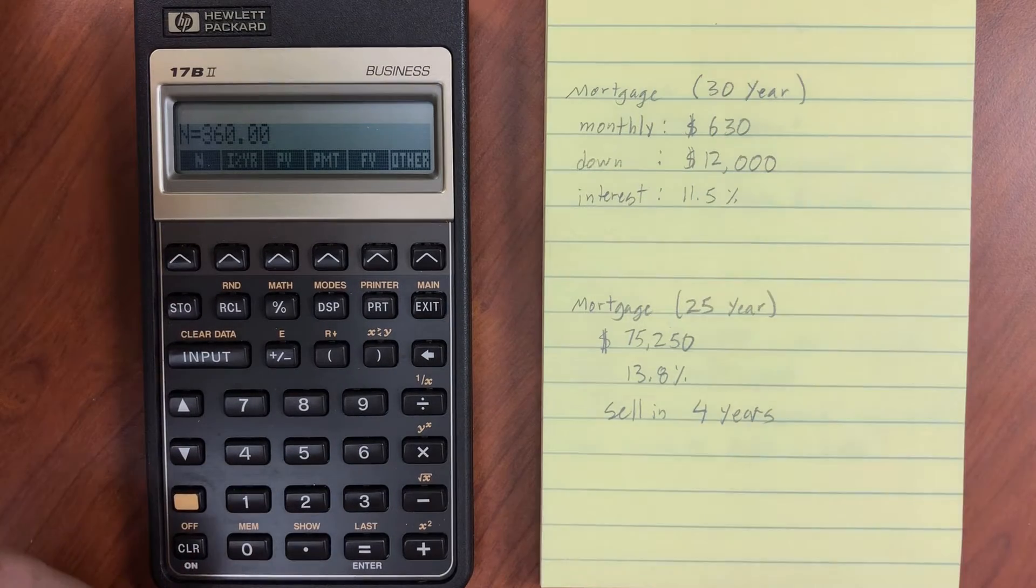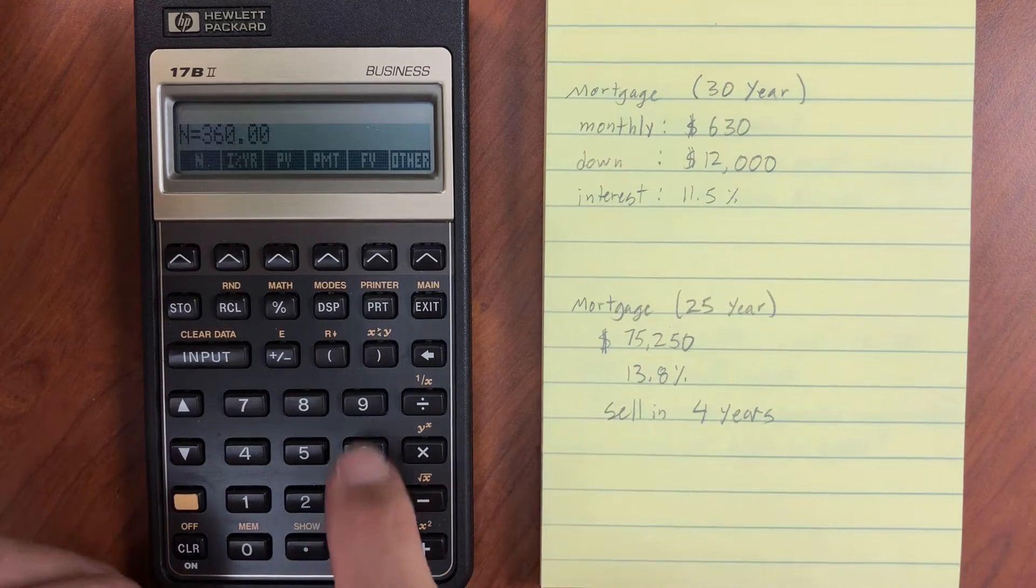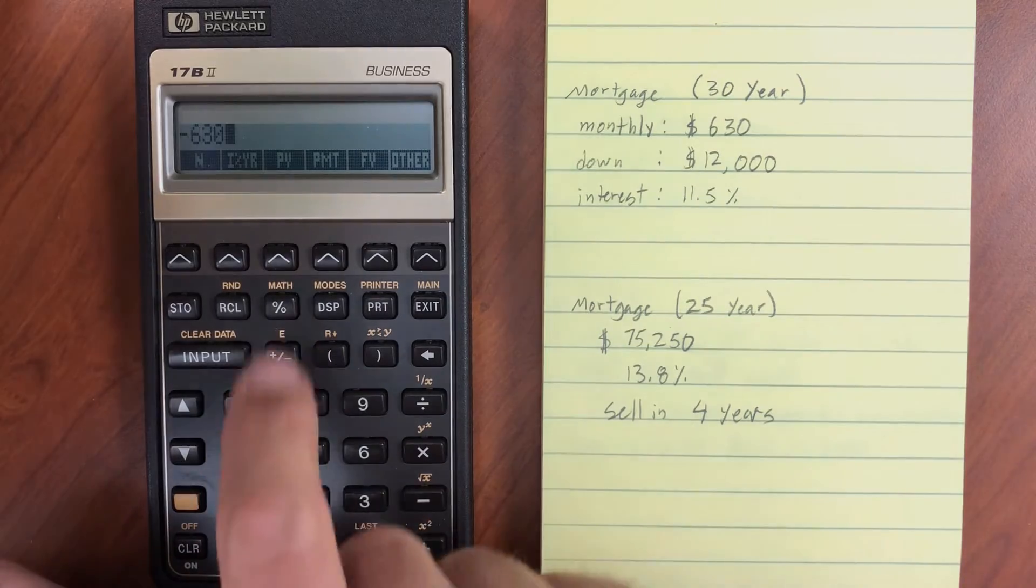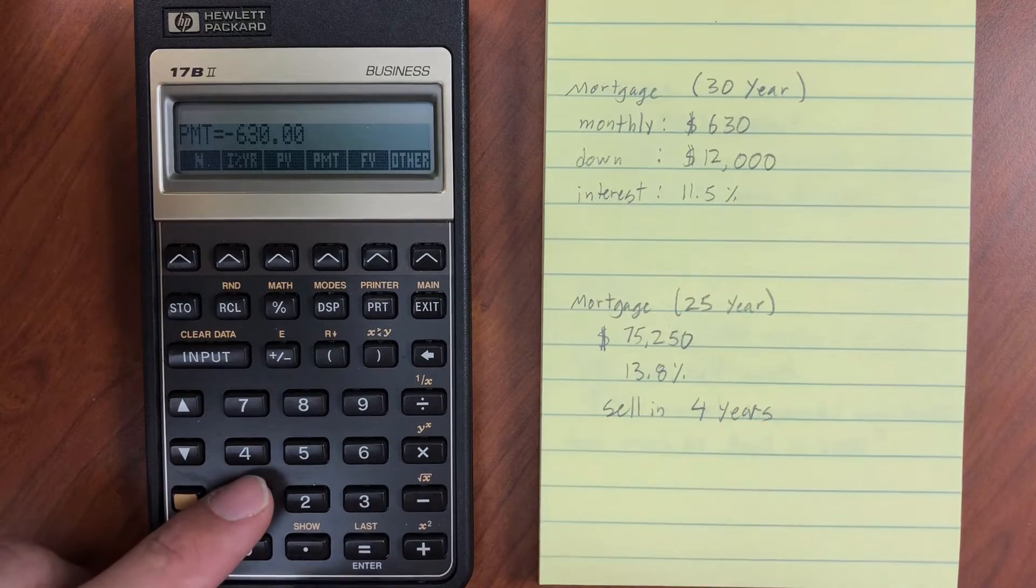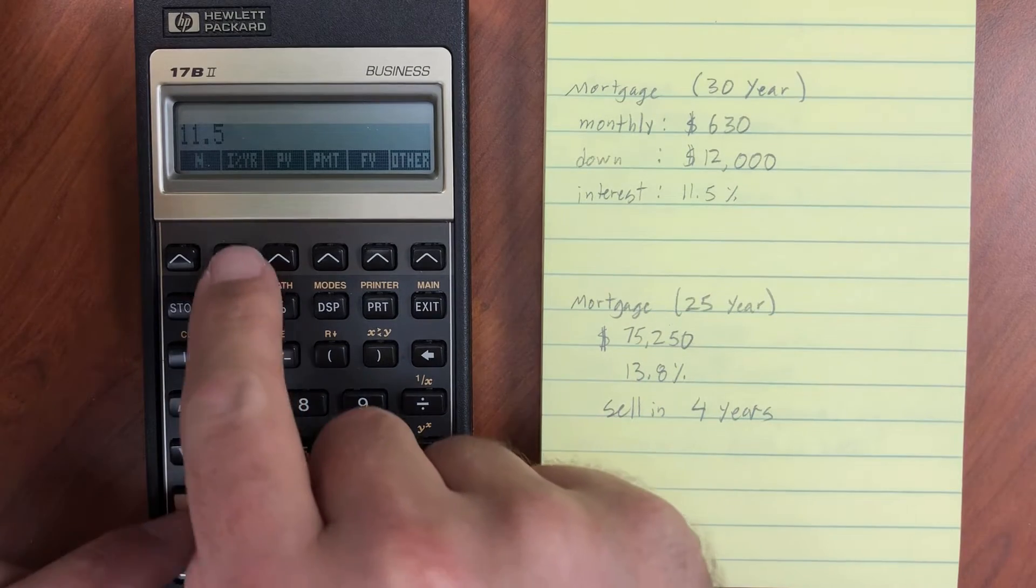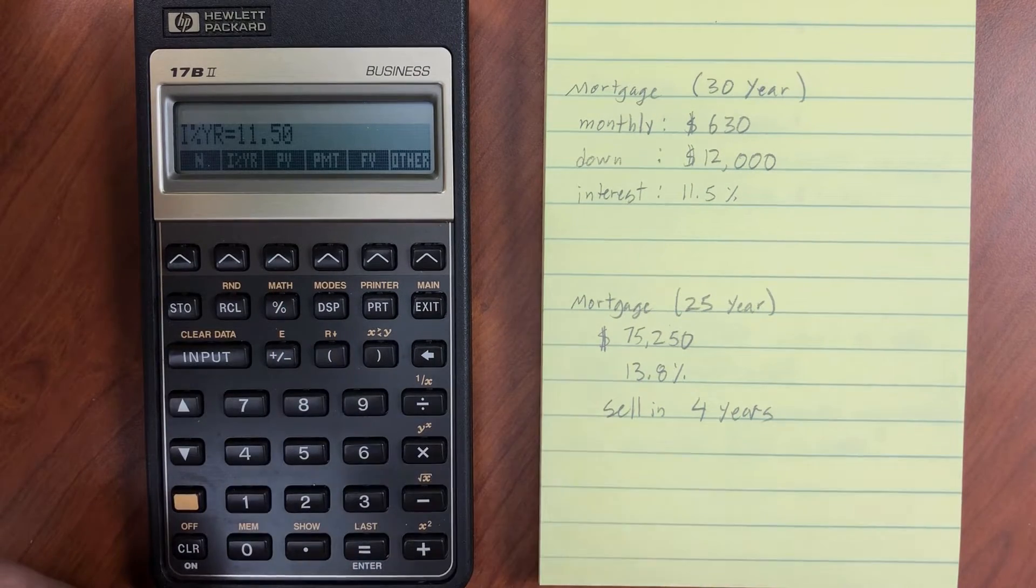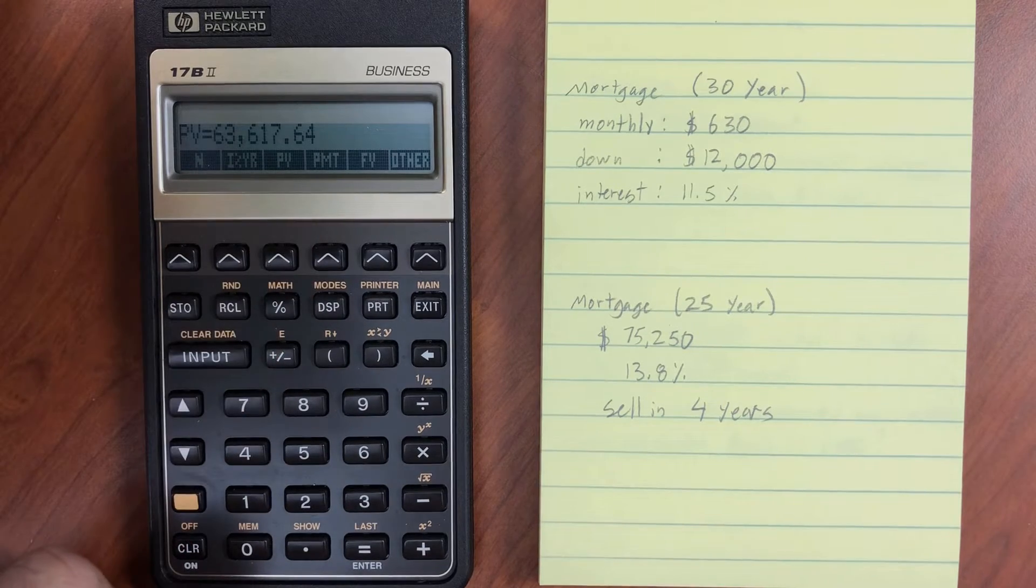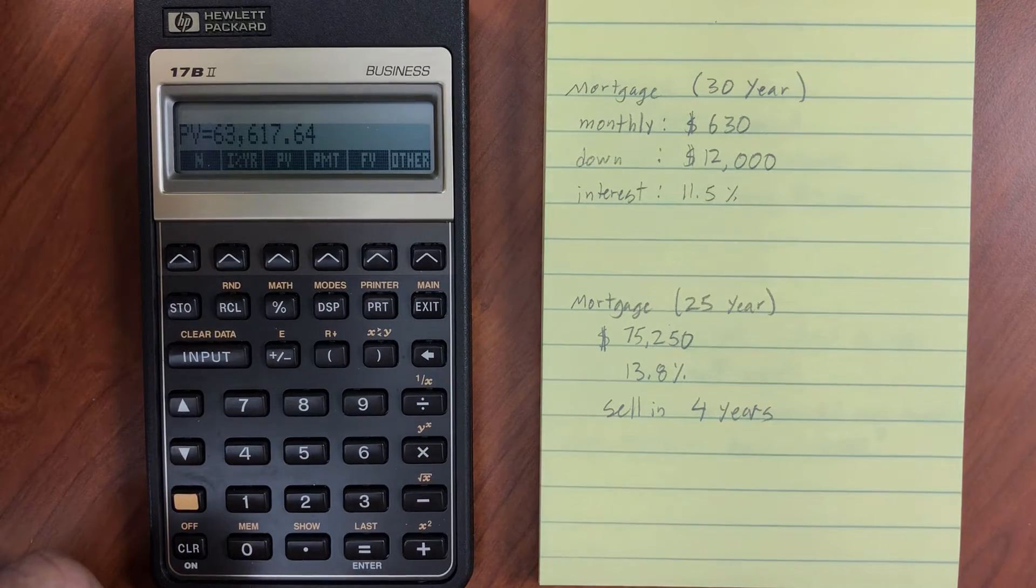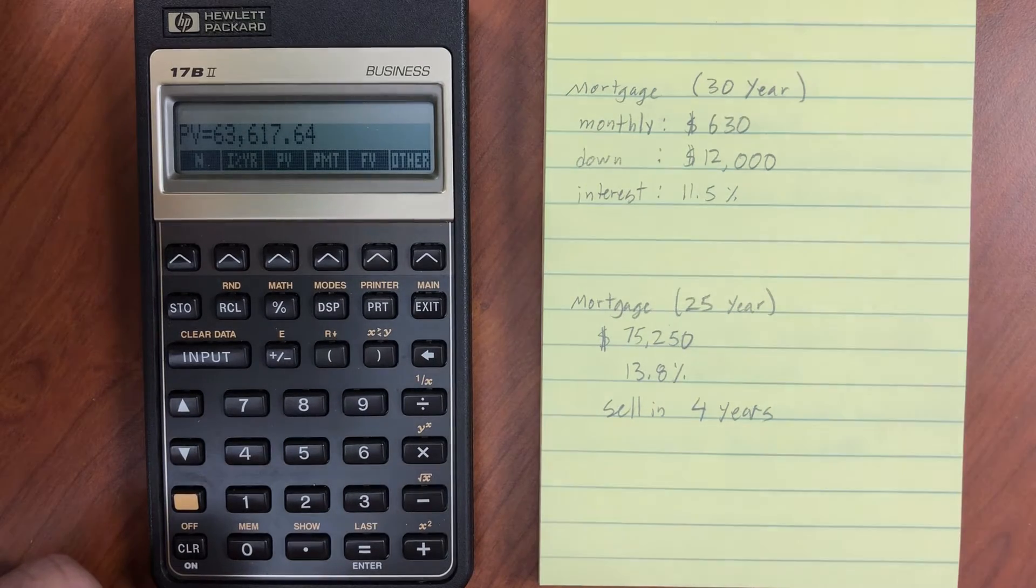Shift N. That gives us the number of periods. Monthly, we can afford $630. Change the sign and put that as our payment. And our interest rate is 11.5%. So let's see what kind of a loan we would be able to afford. So we calculate the present value. We've got $63,617.64 is the loan that we would be able to afford.